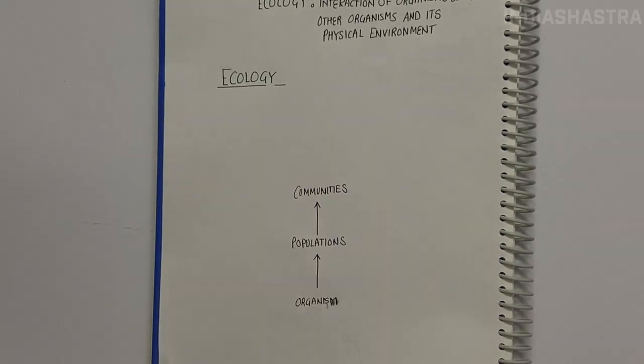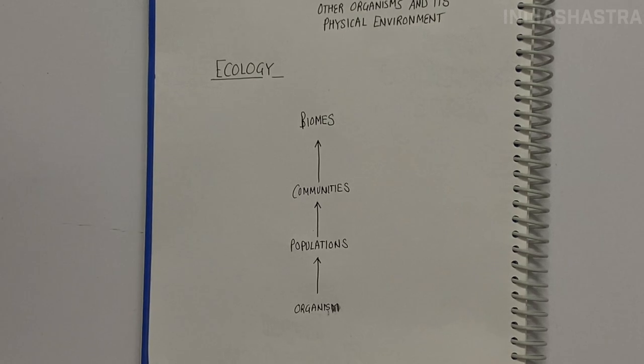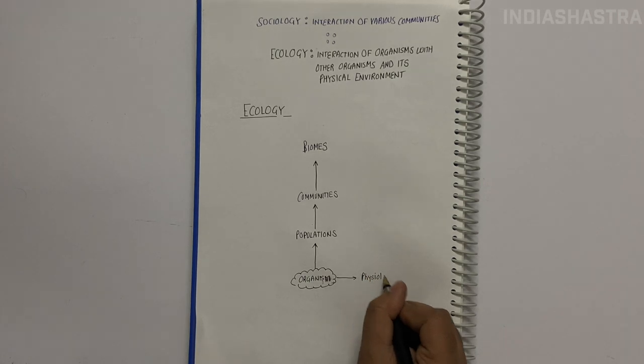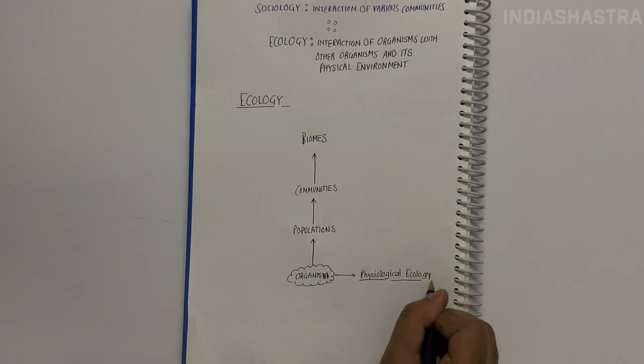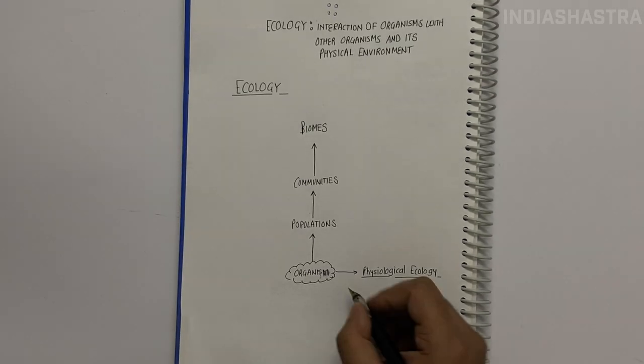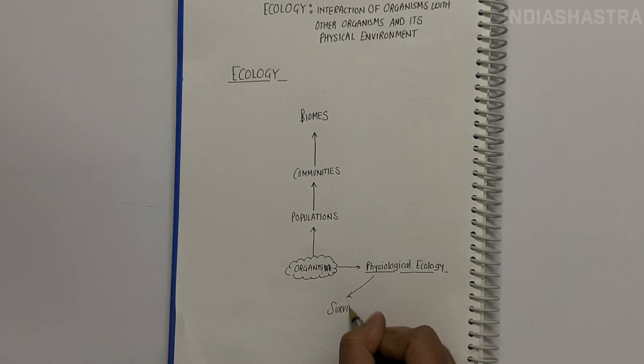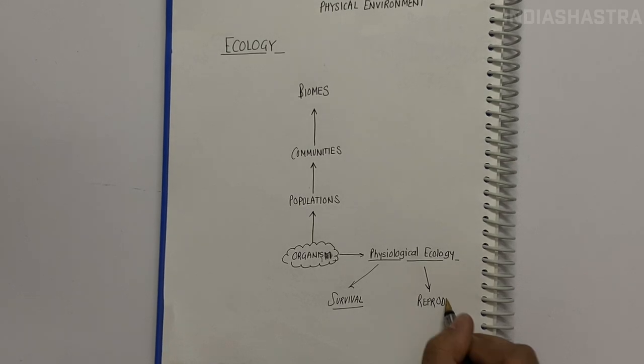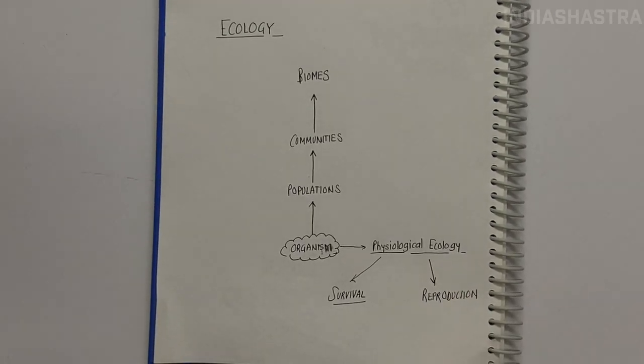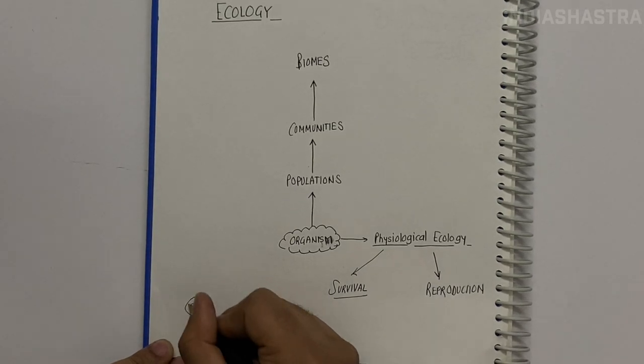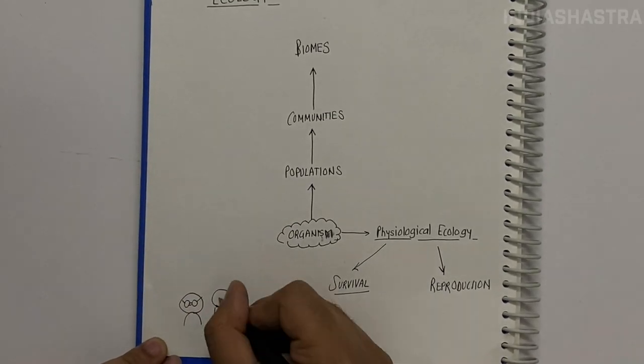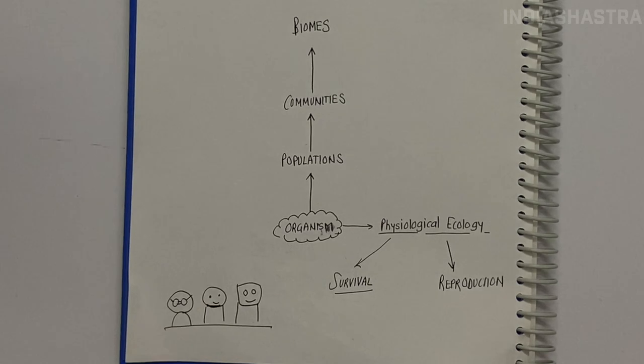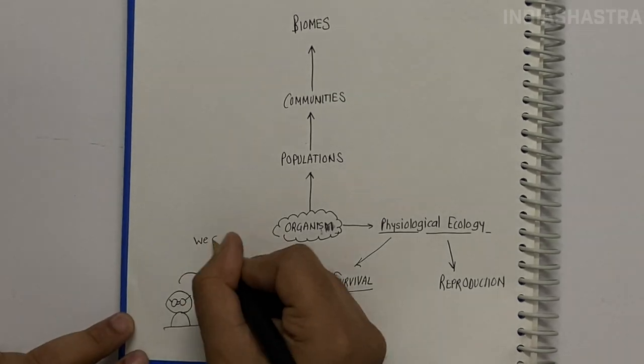In this chapter, we explore Ecology at Organismic and Population level. Organismic level is essentially Physiological Ecology which tries to understand how organisms are adapted to their environments in terms of survival and reproduction. Every organism has to survive irrespective of variation.